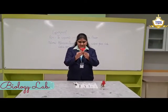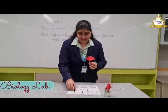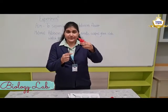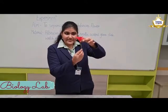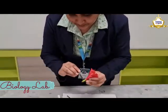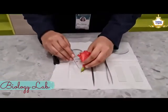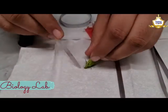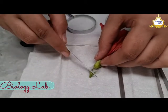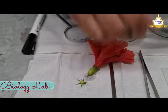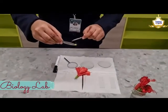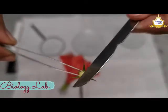This is a hibiscus flower. I am going to take this scalpel and separate the sepals. As we can see, the small leaves surrounding the outer area — these are called the sepals. This hibiscus flower has five sepals in it.